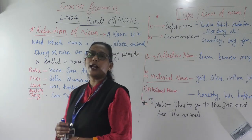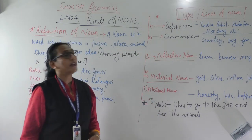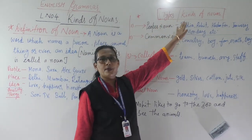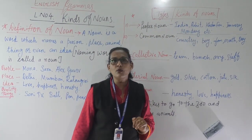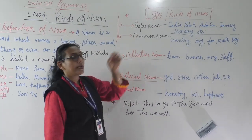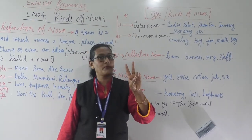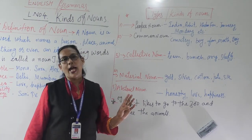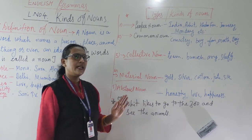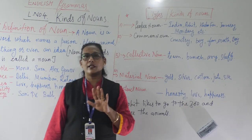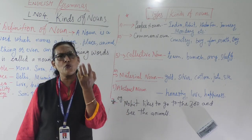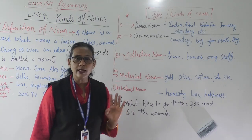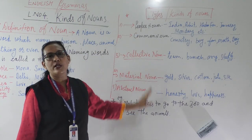How many types of nouns are there? We have the kinds — the types — of nouns. The first is proper noun, common noun, collective noun, material noun, and abstract noun. In your class there are four, and two more — countable and uncountable — that we are also going to see in this lesson. We will see these first five.